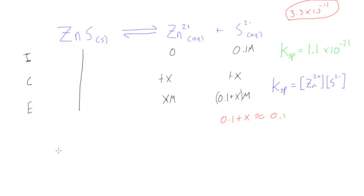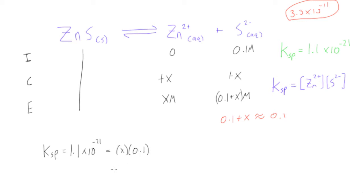So let's finish this up. Ksp is still 1.1 times 10 to the power of negative 21. We have the concentration of zinc ions as x and the concentration of sulfide ions — since 0.1 plus x is essentially 0.1 — as 0.1. All we have to do is divide: x equals 1.1 times 10 to the power of negative 22.